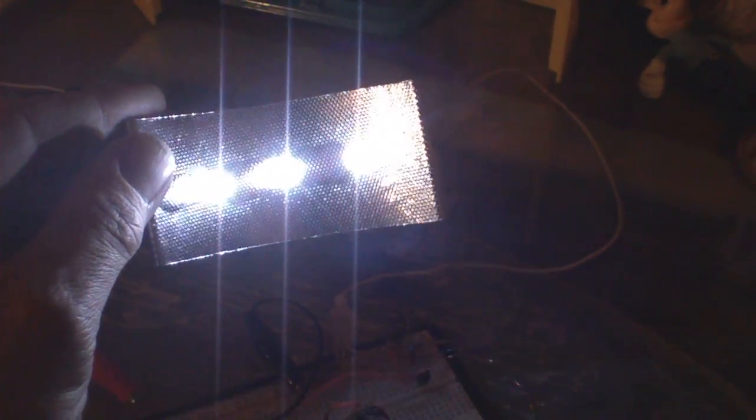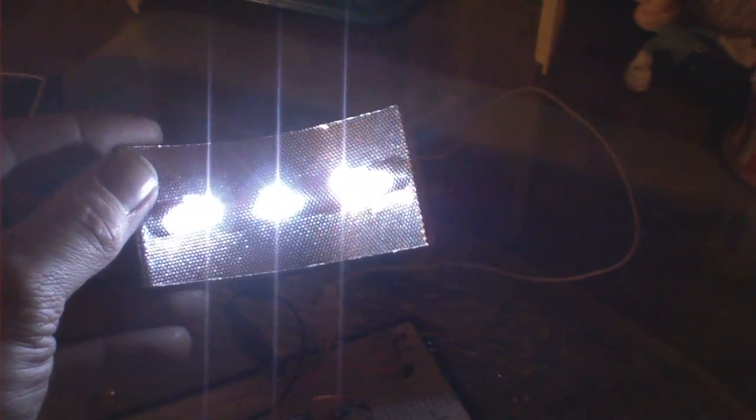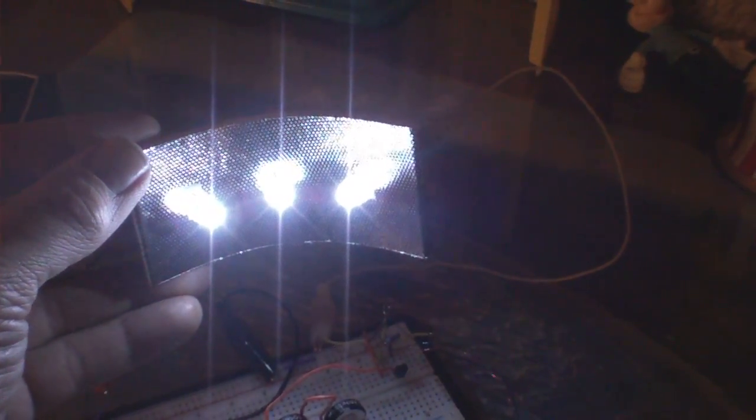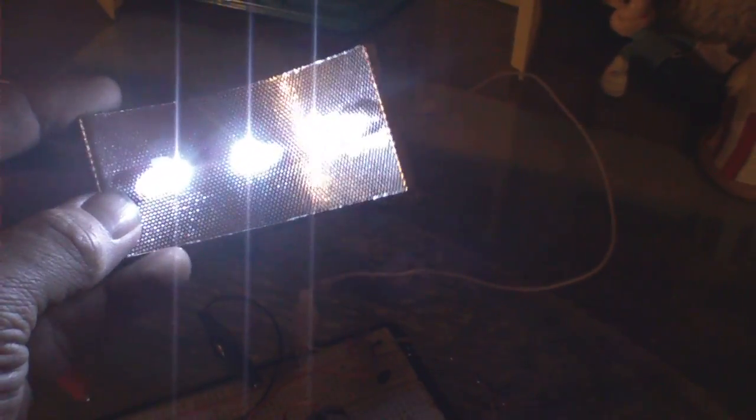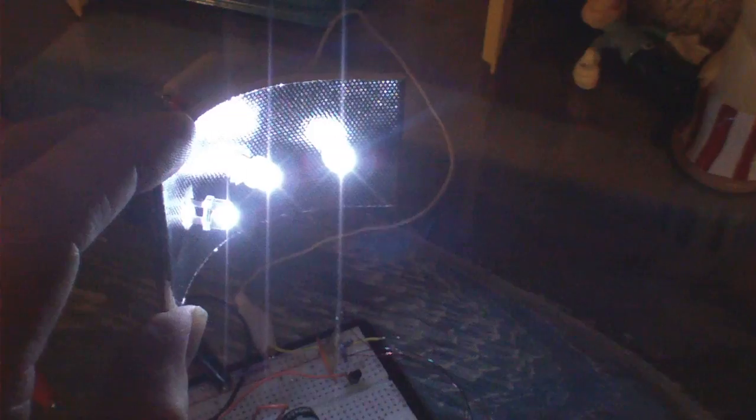Now this reflective stuff that I have in behind is from the dollar store. It's like a gift wrap, and it's not just foil—it's sort of like foil with small perforations. I'm not going to say it's the best stuff in the world, but it does help.